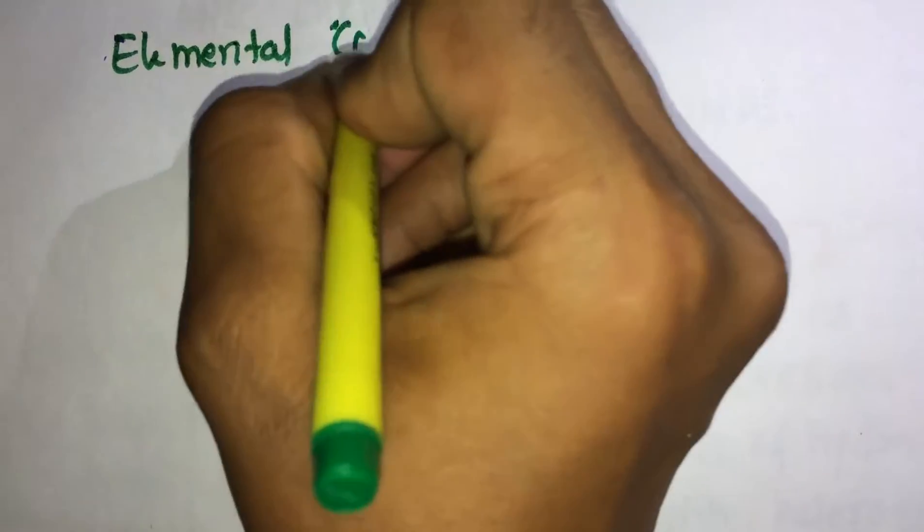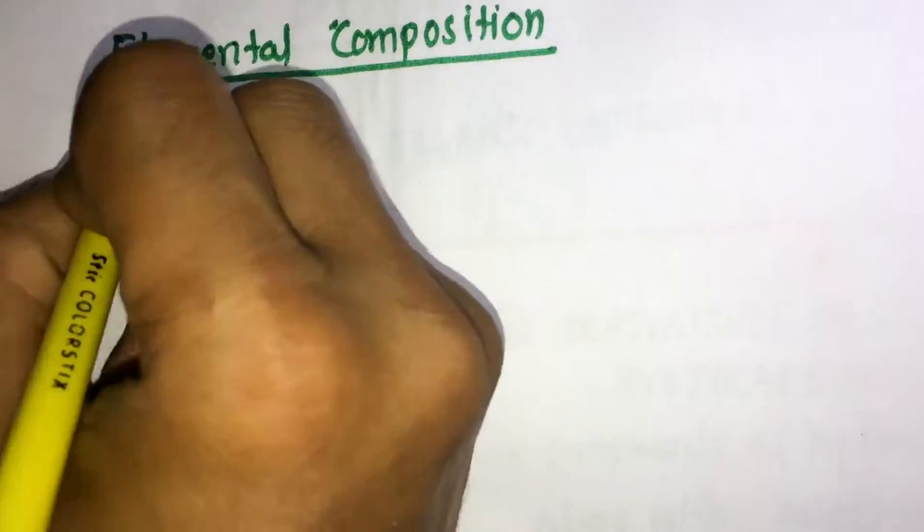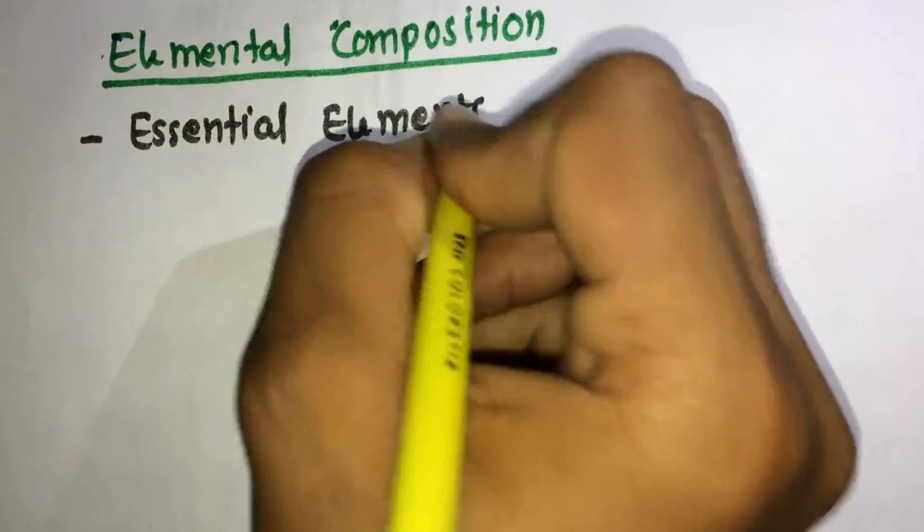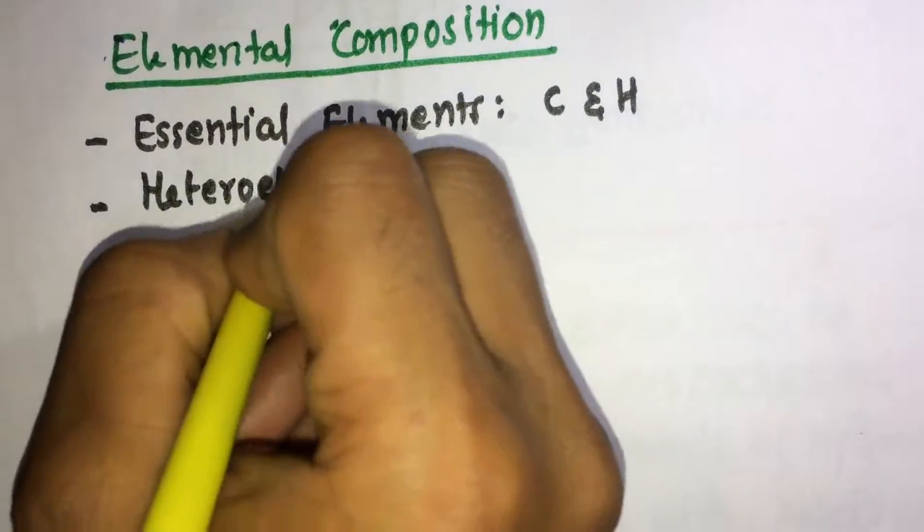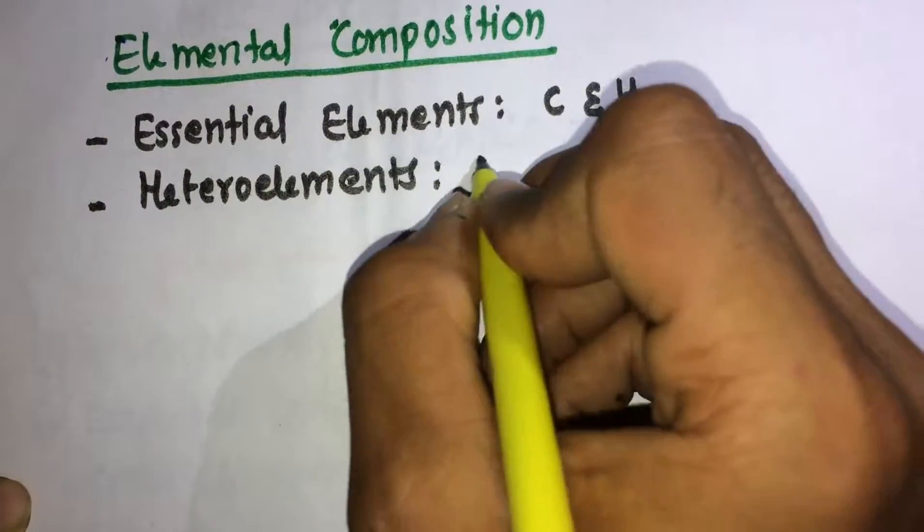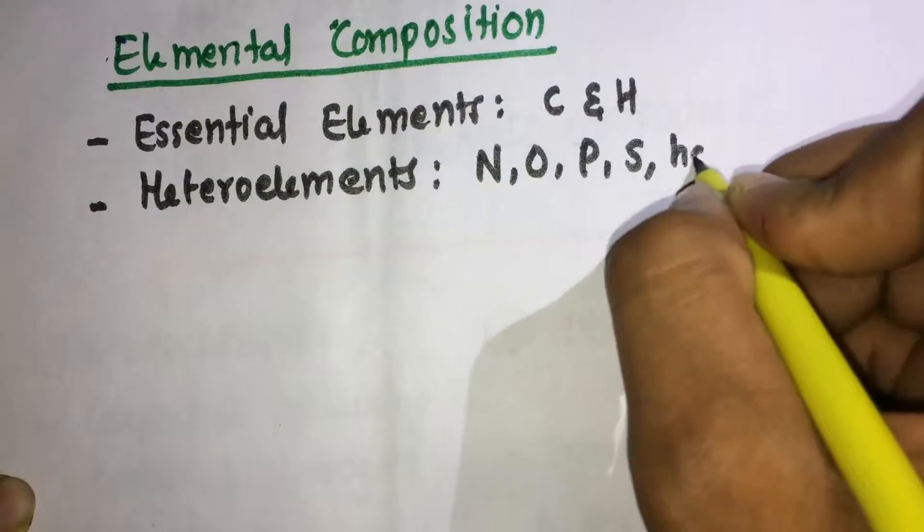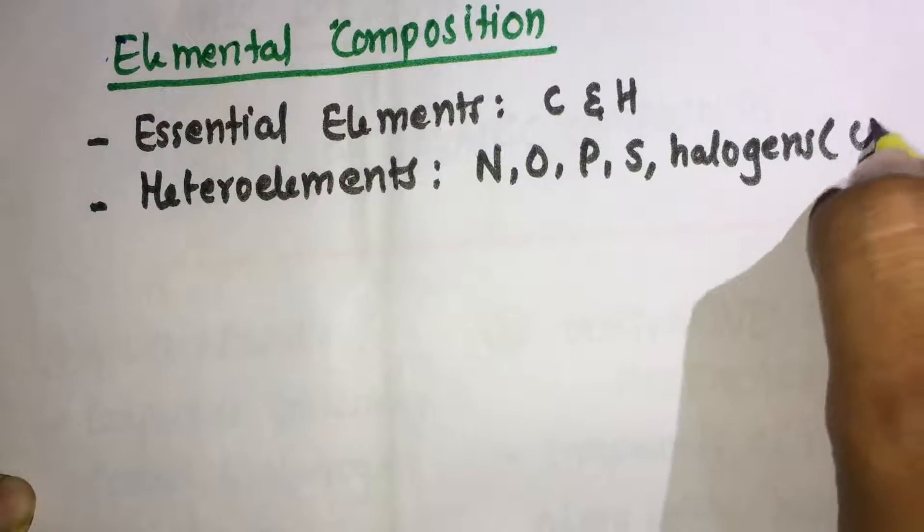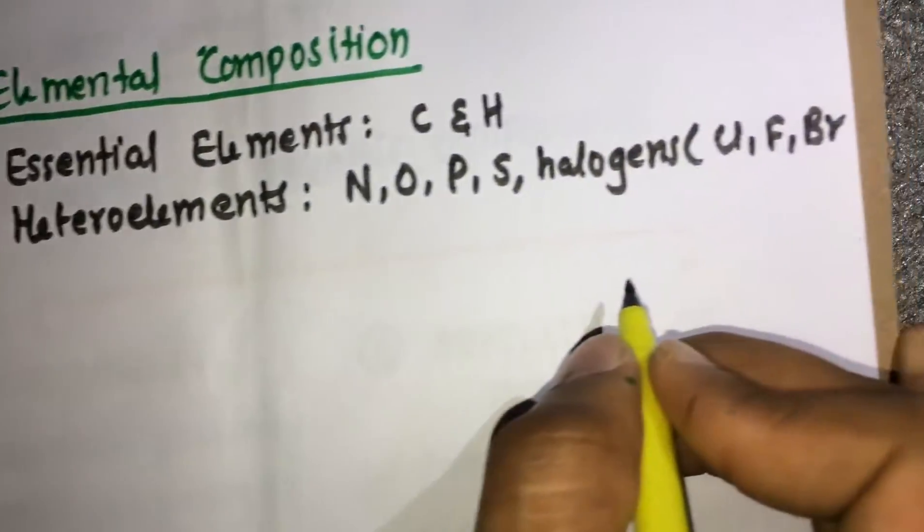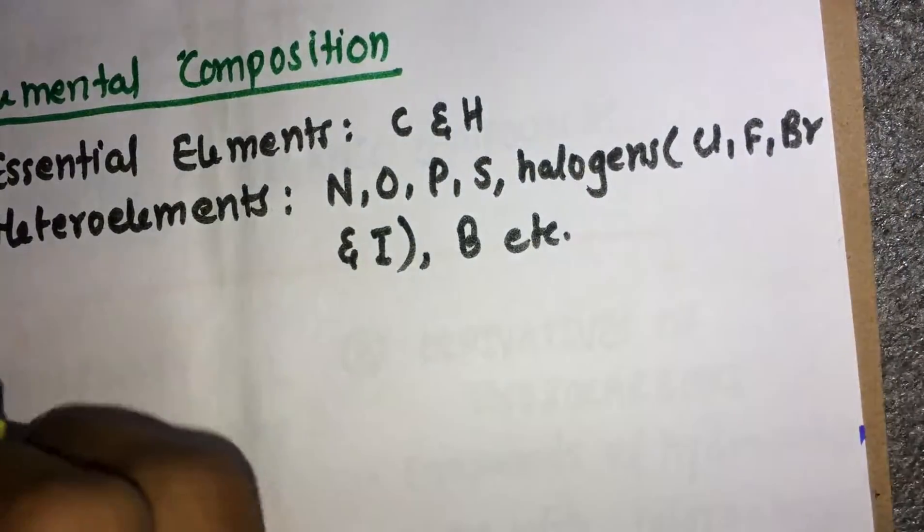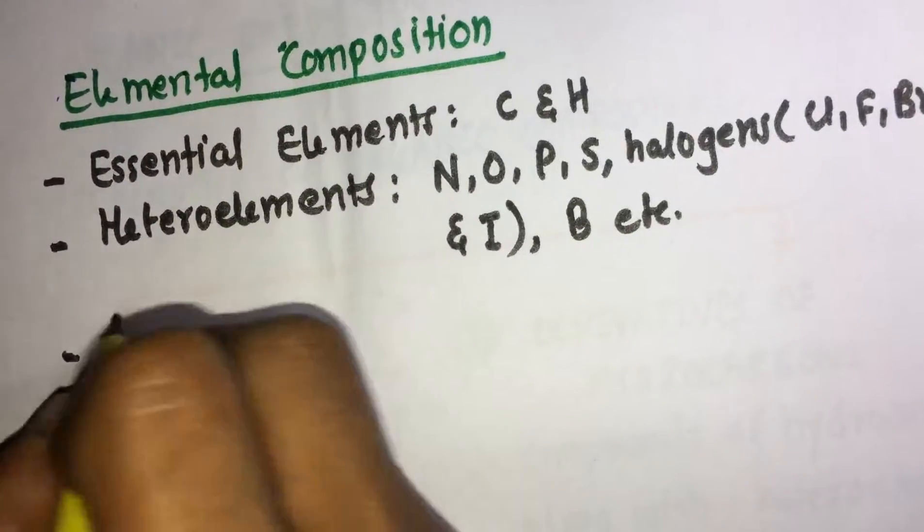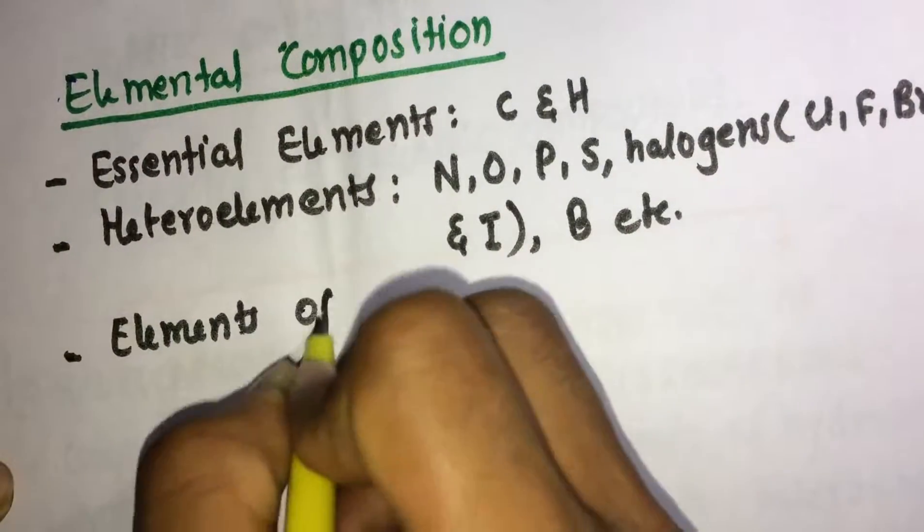So moving to another subtopic: Elemental Composition or Elemental Analysis of Organic Compounds. The elements of organic compounds can be categorized as essential elements under which carbon and hydrogen comes, heteroelements under which nitrogen, oxygen, phosphorus, sulfur, halogens - chlorine, fluorine, bromine, iodine and boron comes.